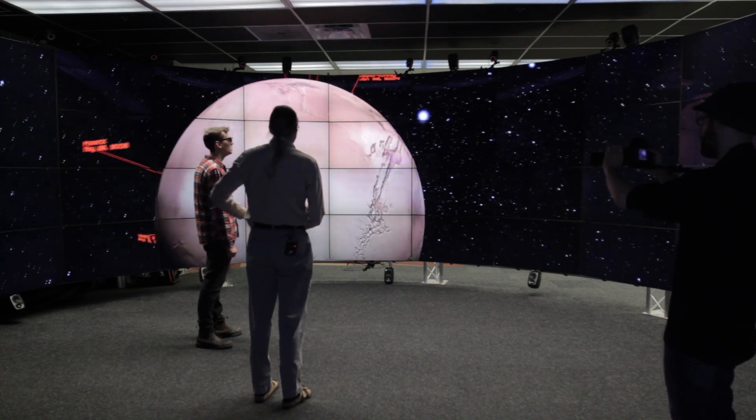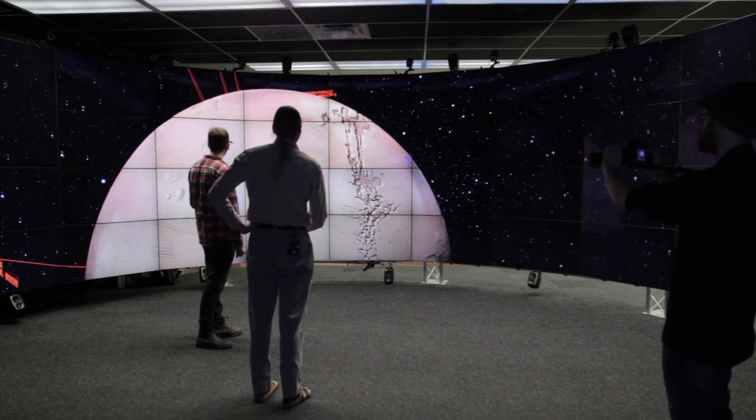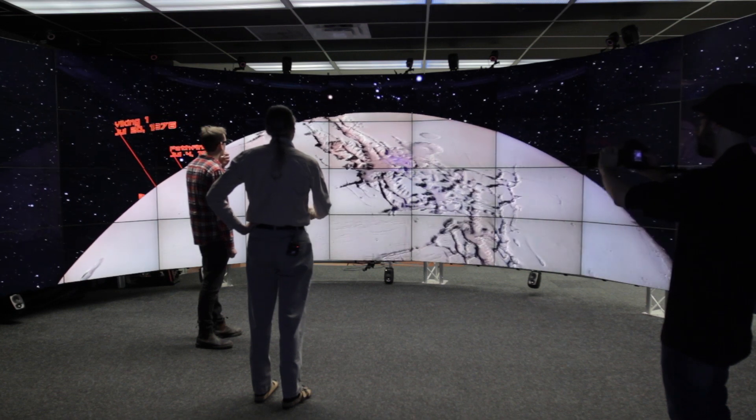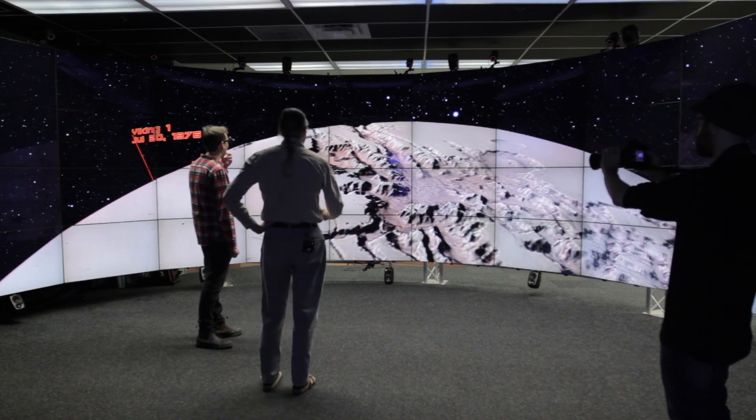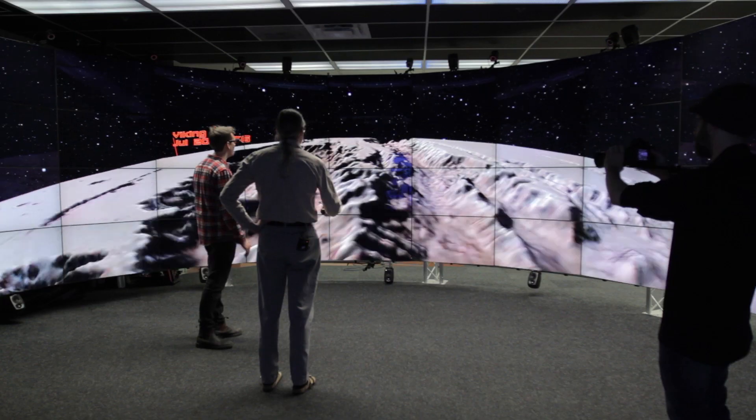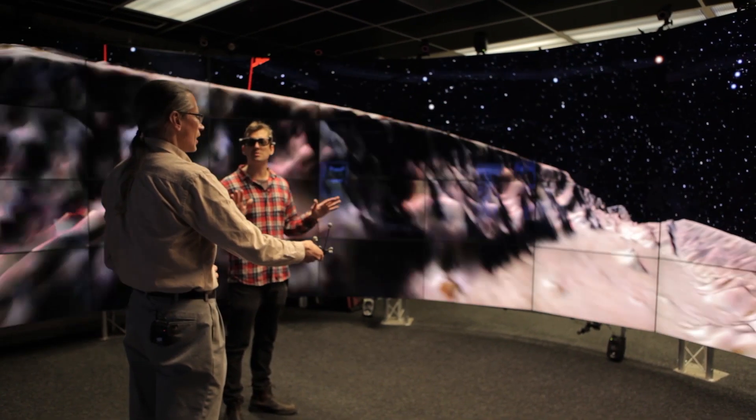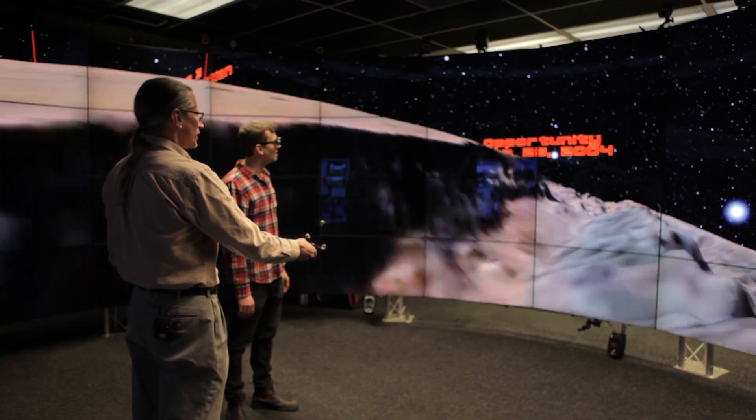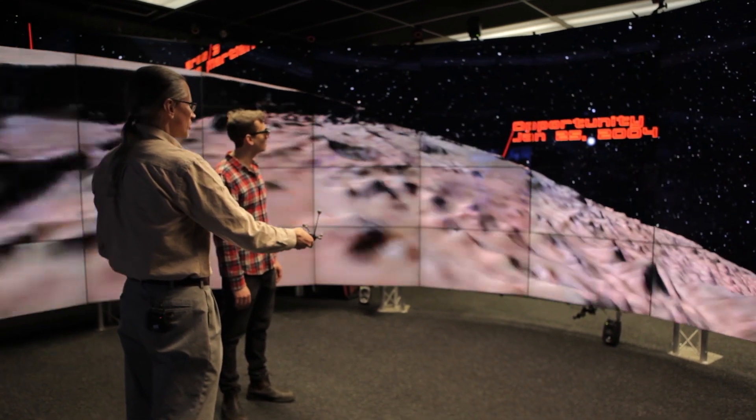So you can see Olympus Mons and the earthquakes. Oh, yeah. And then down to a canyon about as long as the United States. There we go. Oh, man. And this is all real Mars surface data. This is all real data. The elevation is kicked up a little bit to make it a bit more obvious what some of the features are.